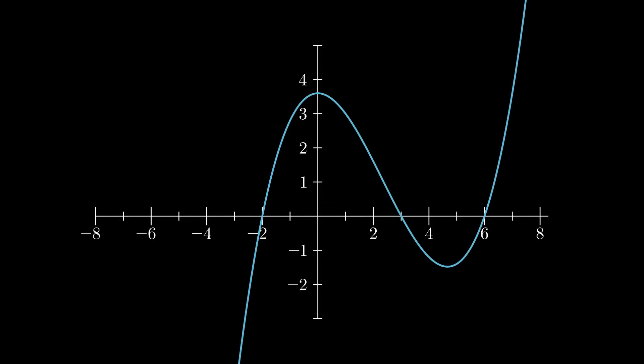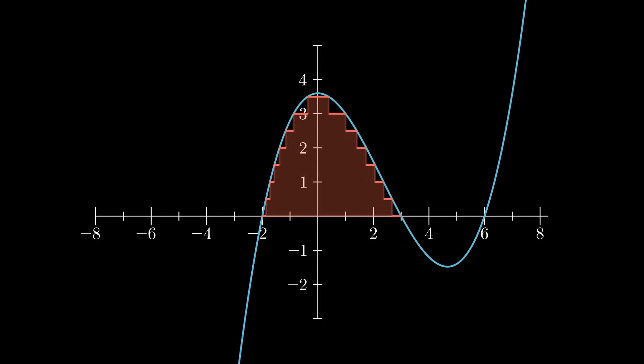Instead of partitioning the domain of the function, we partition the range. Then we fit a simple function under the curve. The area under the curve of this function can easily be computed. By partitioning the range into smaller parts, the approximation of the area becomes better and approaches the actual area under the curve. This is the Lebesgue integral. This approach leads us to the same answer as before, but the method used is much stronger, as we will see.